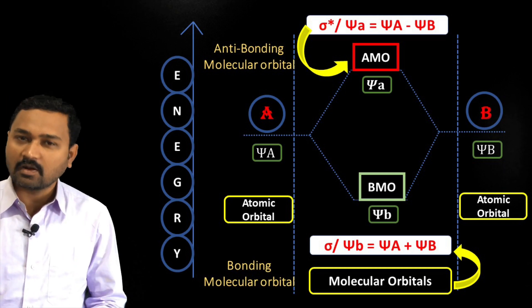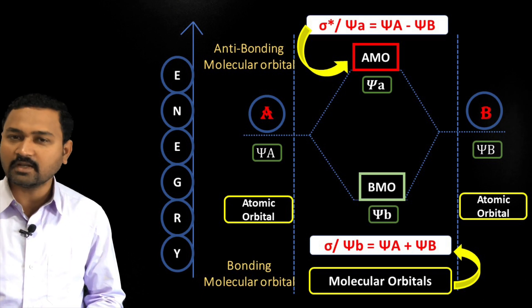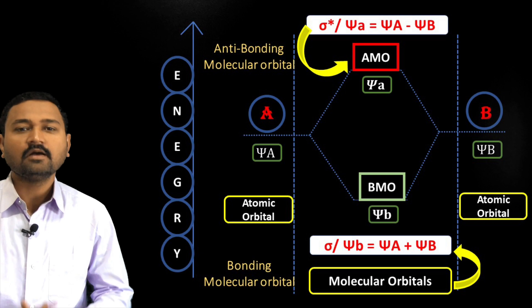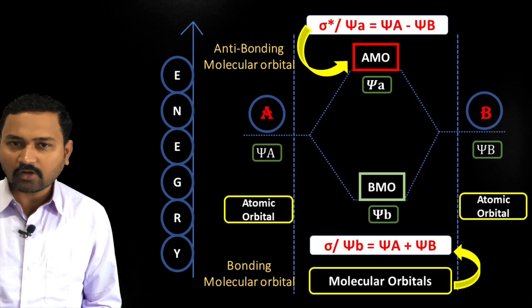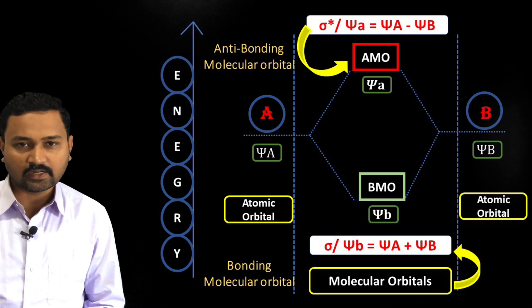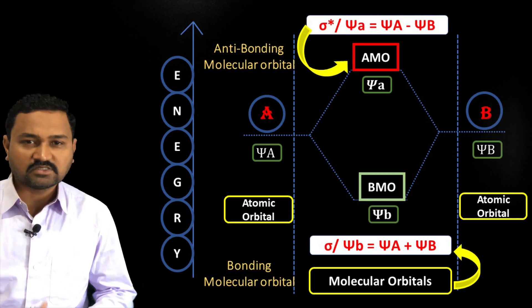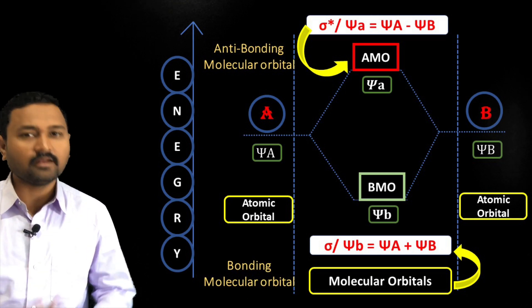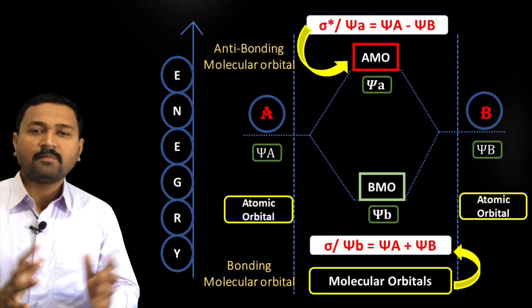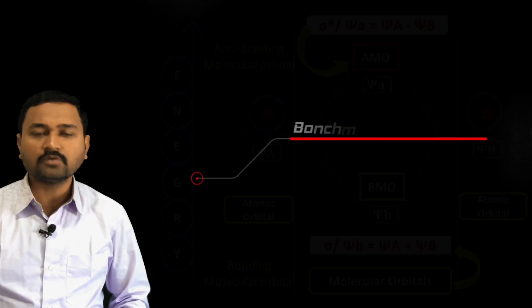When atomic orbitals with the same energy and proper symmetry combine, they form two types of molecular orbitals: the bonding molecular orbital and the anti-bonding molecular orbital. Let us now learn in detail how exactly these bonding and anti-bonding molecular orbitals are formed by the linear combination of atomic orbitals.